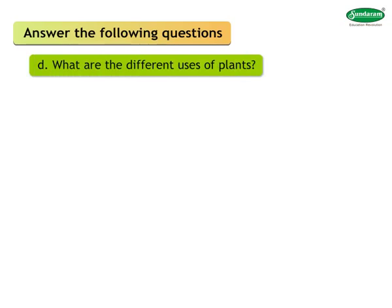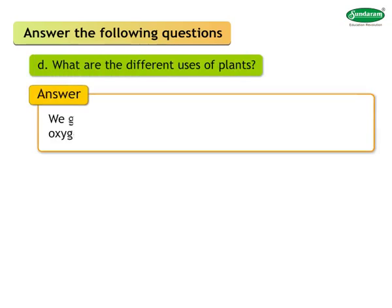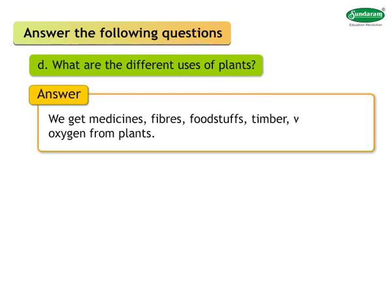Answer: We get medicines, fibers, foodstuff, timber, wood, and oxygen from plants.